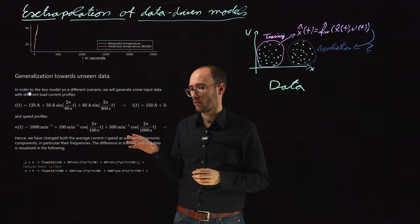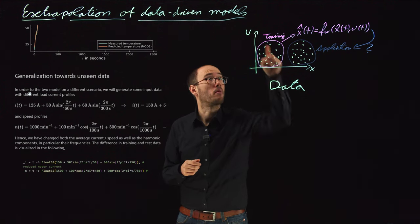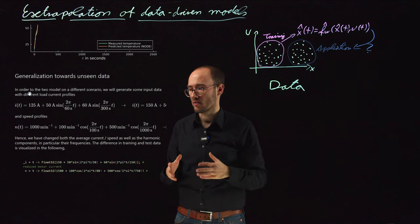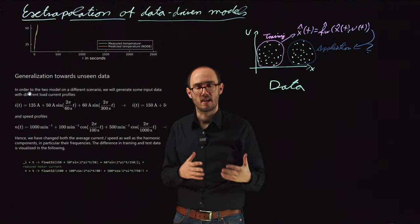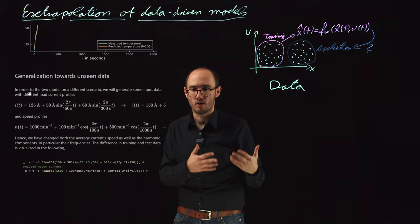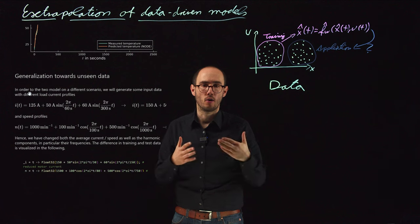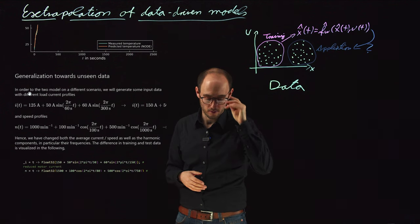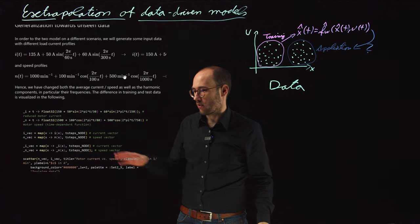And we also change the speed. So therefore, the two inputs, the two major inputs to the thermal behavior of the model are changed. But of course, the true system will also react on that, because if you change the current and the speeds of a DC motor, the loss behavior will be different, and if the loss behavior will be different, also the temperature behavior will be different.